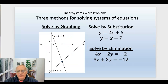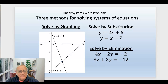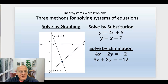We've looked at three methods for solving systems of equations. Just to review: we solve by graphing, where you graph them and look at the intersection of the two lines. You can solve by substitution, which works best when one or both equations are already solved for one of the variables. Or we can use elimination, where you find an additive inverse and add the equations together to eliminate one variable, solve for it, and plug it into one of the original equations to find the other variable.